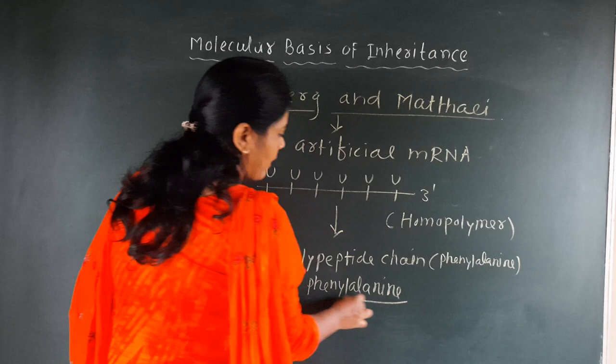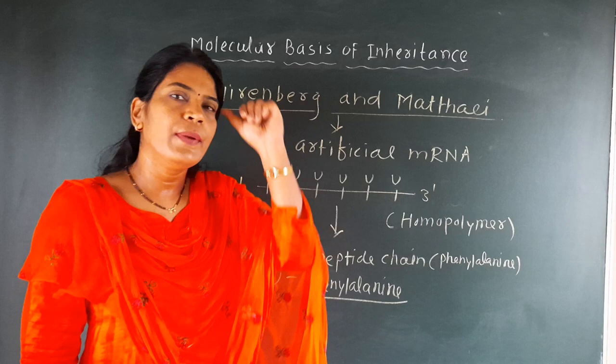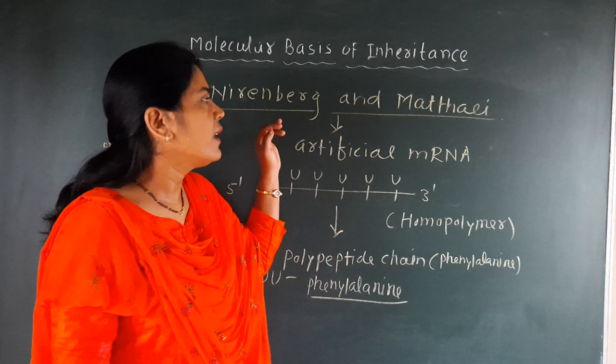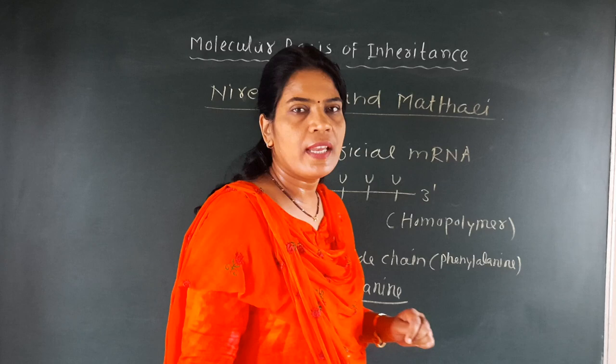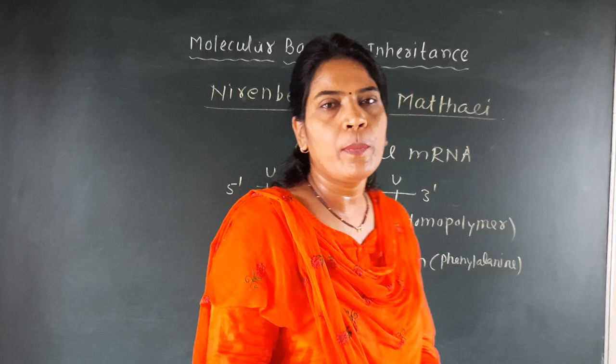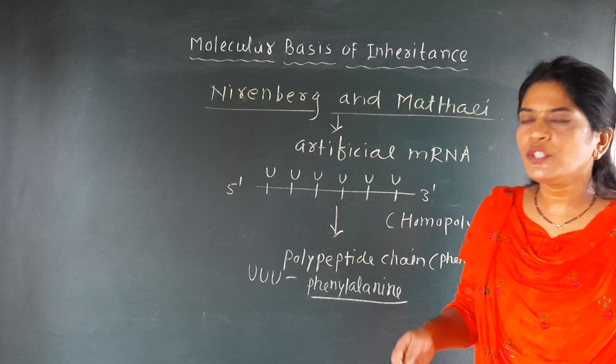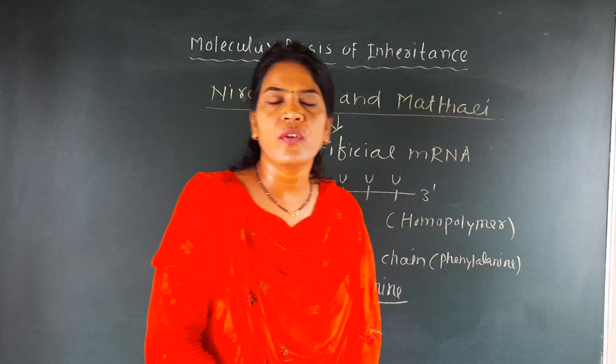That amino acid is called phenylalanine. If the question is asked that phenylalanine amino acid is the combination of U-U-U, it was first discovered by the scientists Nirenberg and Mathai, who first proposed artificial mRNA in the laboratory. It is the contribution of Nirenberg and Mathai, who first proposed this artificial mRNA having only uracil base pair — called a homopolymer — and the U-U-U base pair formed the phenylalanine.